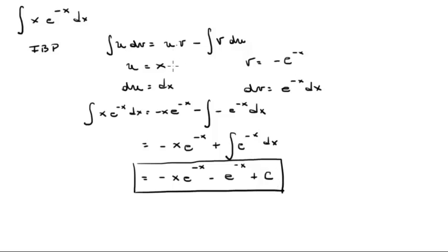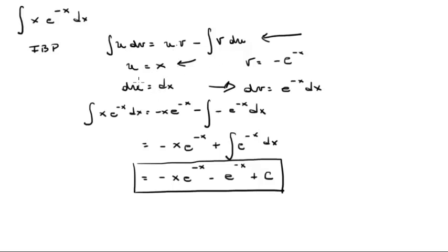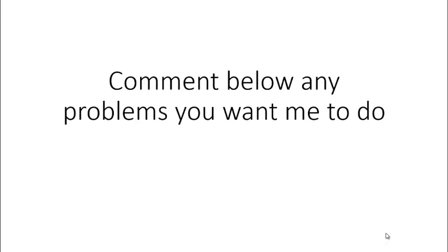In conclusion, the hardest part about integration by parts is memorizing the formula, so memorize it — it's a very easy formula, no excuses. The other challenge is finding which u and dv makes the problem easier. If you choose them and it's getting too complicated, think about switching them up and see what happens. Please comment below if you want me to do any problems and I'll be happy to help. Thank you.